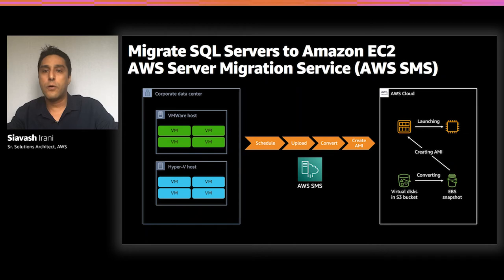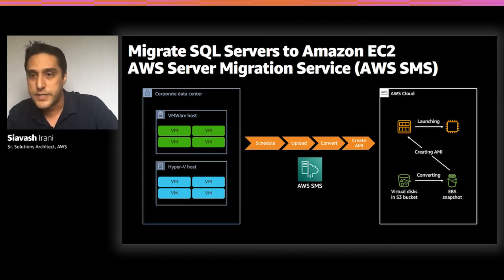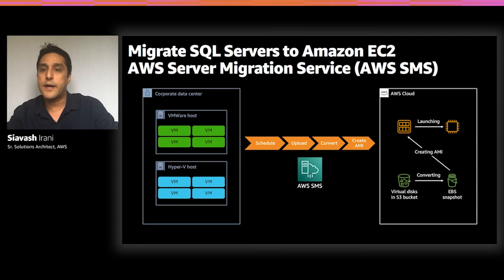If your IT policies don't allow agent-based migration tools, AWS Server Migration Service is an agentless service that lets you automate, schedule, and track incremental replications of live server volumes. It uses a virtual appliance running in Microsoft Hyper-V or VMware in your data center. When you schedule a migration task, Server Migration Service uploads the virtual machine's disk to an Amazon S3 bucket, converts it to EBS volumes, adds required hypervisor drivers and components, and creates Amazon Machine Images from those EBS volumes, which you can then use to create EC2 instances.